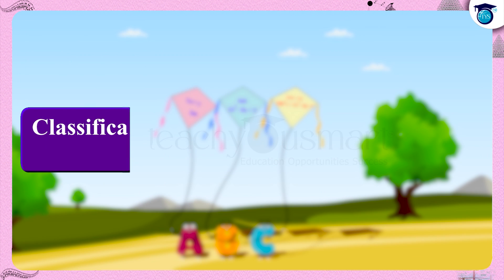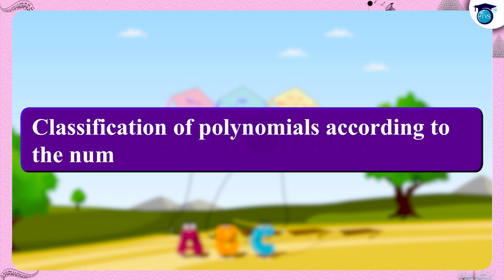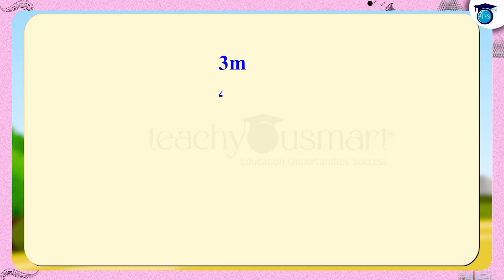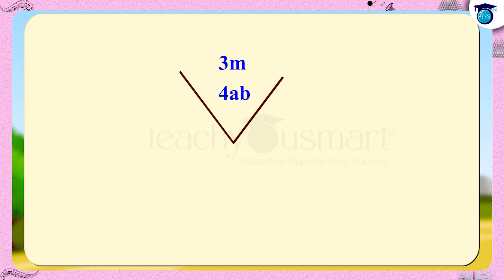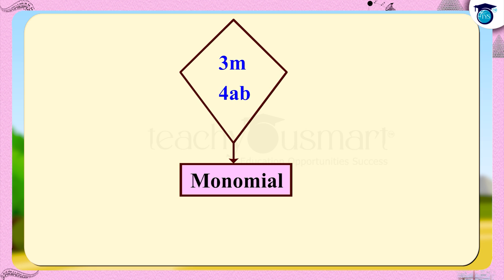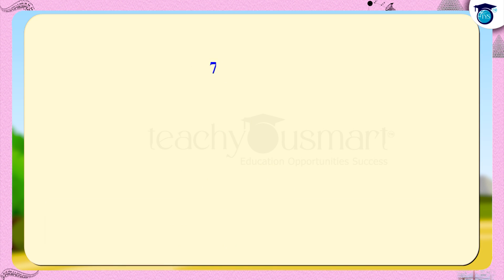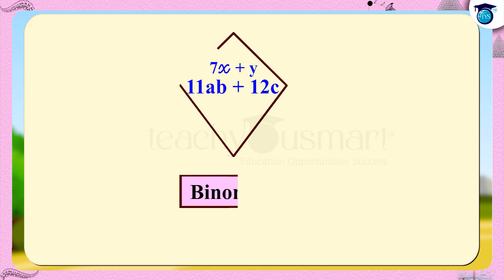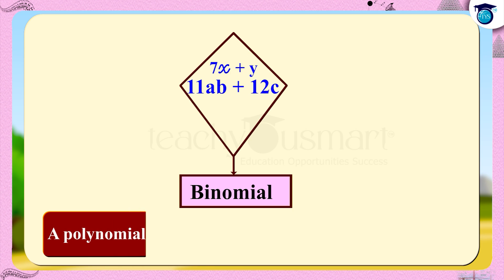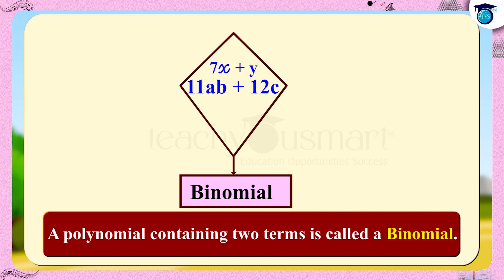Now let's see the different classifications of polynomials according to the number of terms. Consider 3m and 4ab — there is only one term in each. Therefore, 3m and 4ab are monomials. A polynomial containing only one term is called a monomial. Now consider 7x plus y and 11ab plus 12c — here there are two terms each, so they are binomials. A polynomial containing two terms is called a binomial.